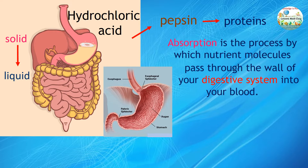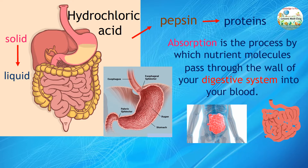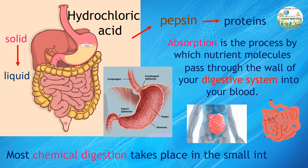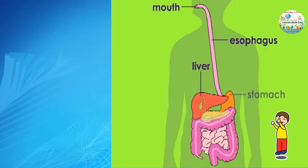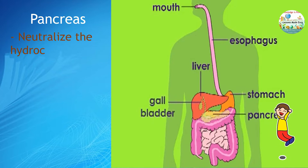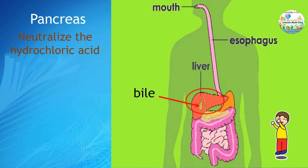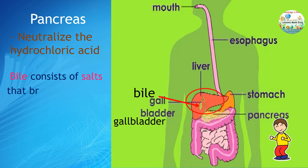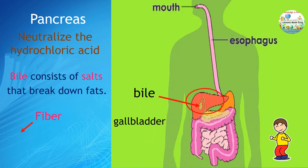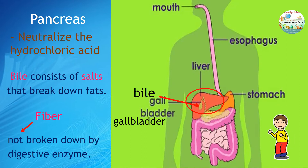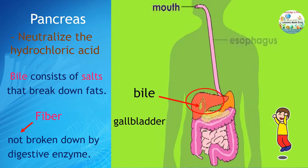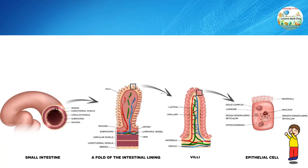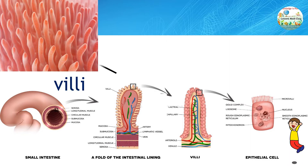The food goes next to the small intestine, which is the part of the digestive system where most chemical digestion takes place. As the food reaches the small intestine, the pancreas releases enzymes to neutralize hydrochloric acid. The liver secretes bile, stored in the gallbladder. Bile consists of salts that break down fats. Fiber is one substance that is not broken down by any digestive enzymes; instead, fiber thickens the liquid material in the intestine, making it easier for peristalsis to push the material through the digestive system. The walls of the small intestine are covered in villi, which are tiny hair-like structures that help in absorption of nutrients.